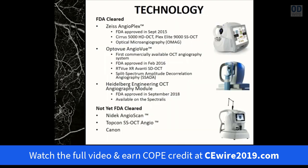Currently three FDA-cleared OCT angiography systems are commercially available for purchase in the U.S.: the Zeiss Angioplex available on the Cirrus 5000 HD OCT, the OptiView AngiOview available on the Avanti, and the Heidelberg OCT angiography module available on the Spectralis. Several other systems are either still in development or awaiting FDA clearance, such as the NIDEC Angioscan and the angiography component of the Topcon Triton swept-source OCT.